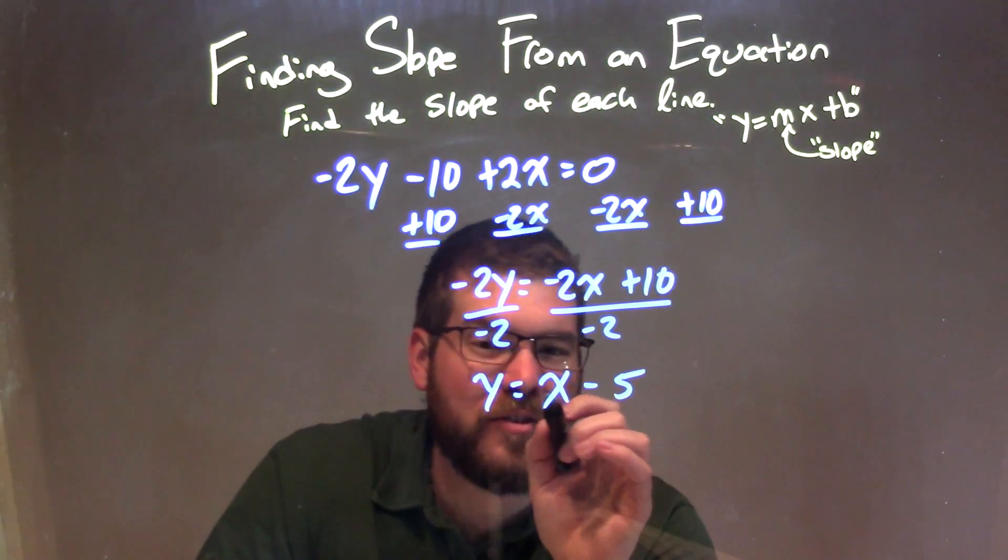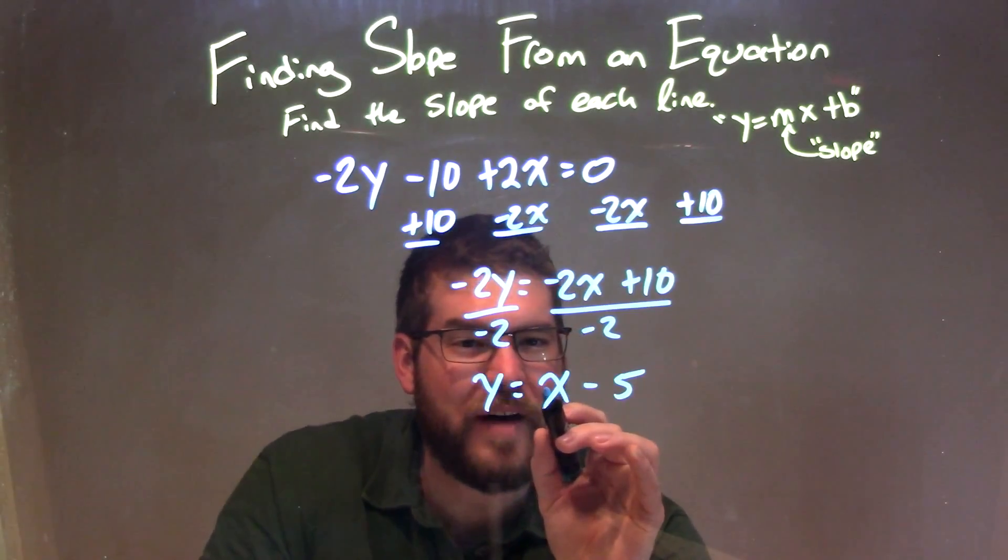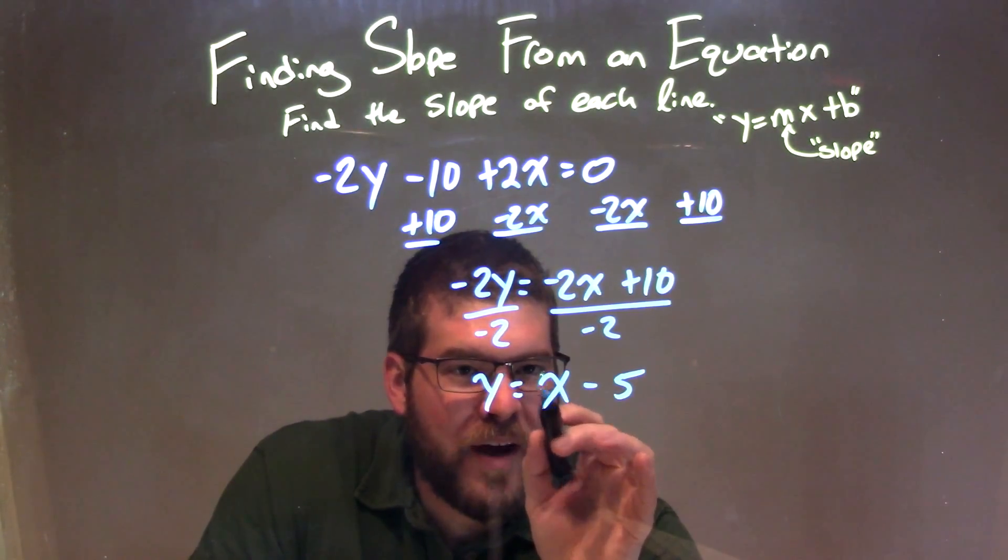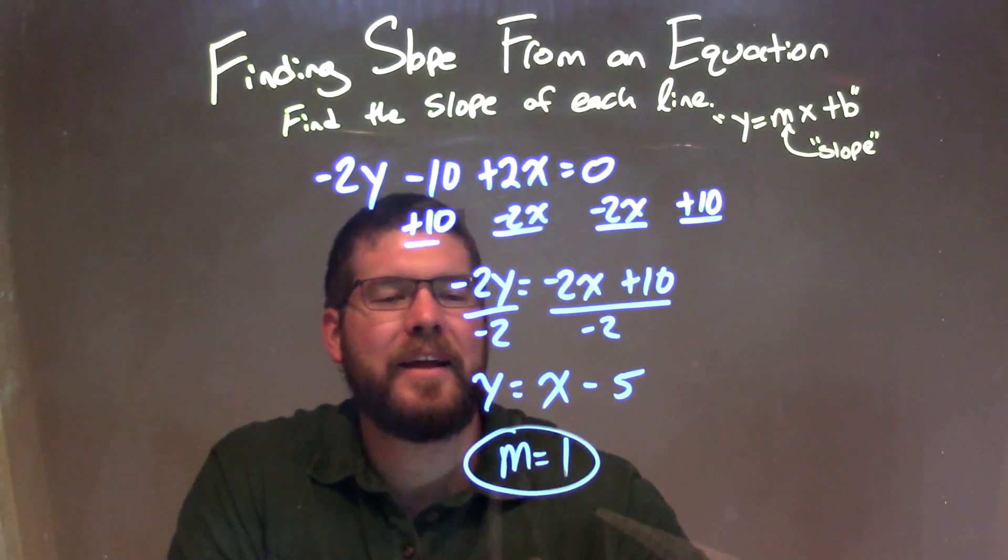This is our slope intercept form, y equals mx plus b. What's our m value? The coefficient for x, which is just that 1, that value that's right in front of x. So we have m equals a positive 1 there, and that is our final answer.